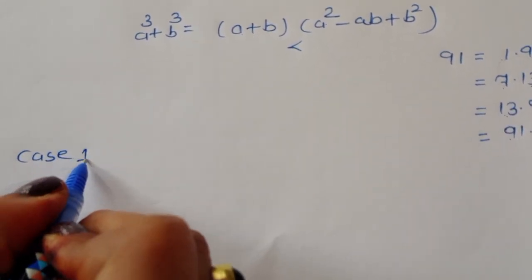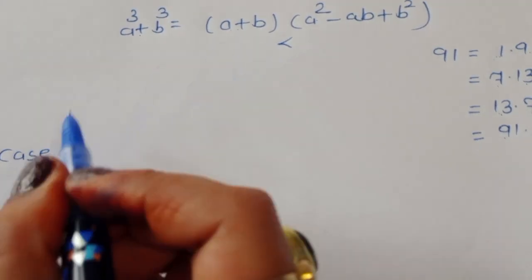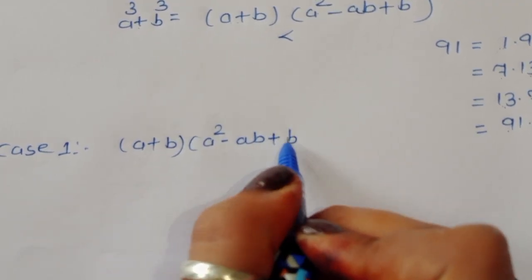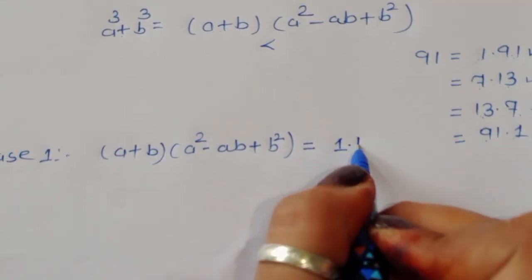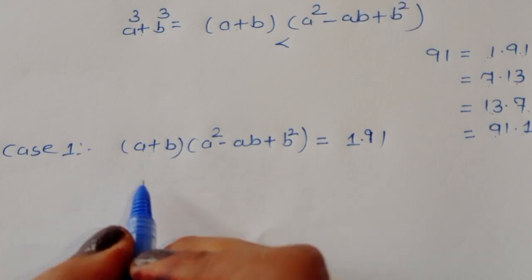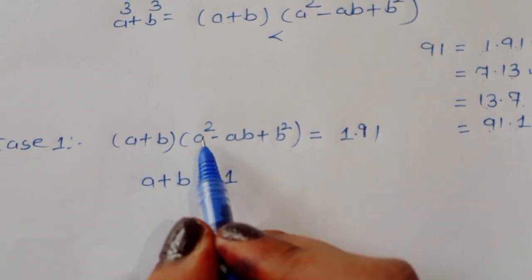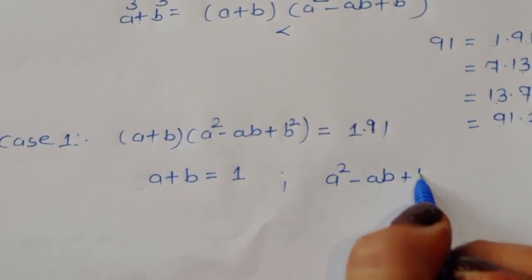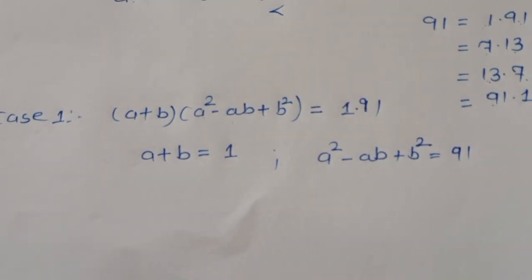Case 1: (a + b)(a² − ab + b²) = 1 × 91. Comparing LHS and RHS: a + b = 1 (equation 1) and a² − ab + b² = 91 (equation 2).